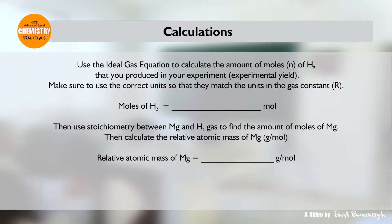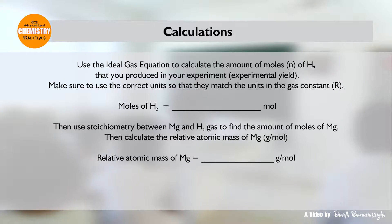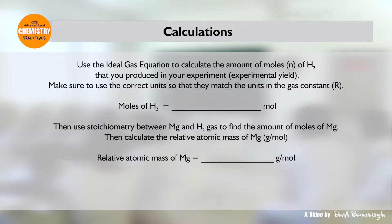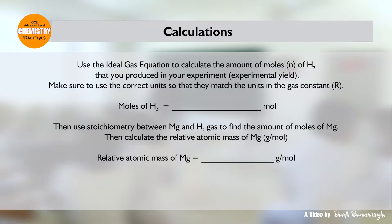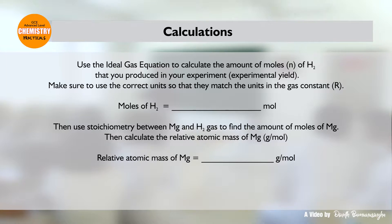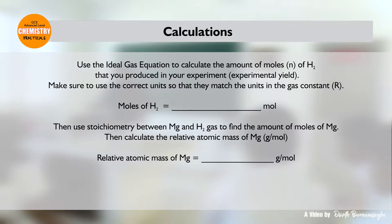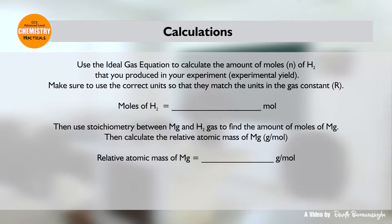Calculations: Use the ideal gas equation to calculate the number of moles of hydrogen that was produced in the experiment. Make sure to use the correct units so that they match the units in the gas constant. Then use the stoichiometry between magnesium and hydrogen gas to find the amount of moles of magnesium, and calculate the relative atomic mass of magnesium in grams per mole.